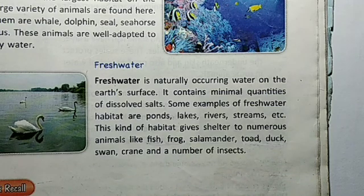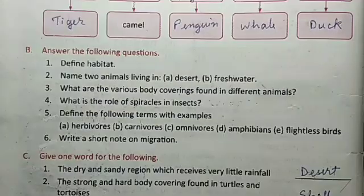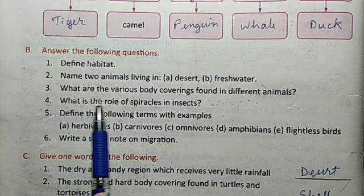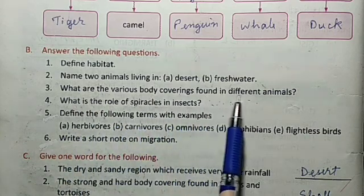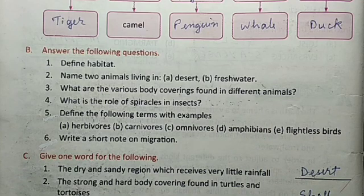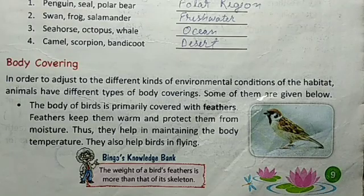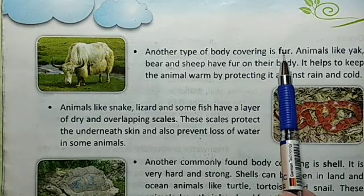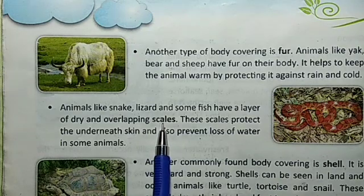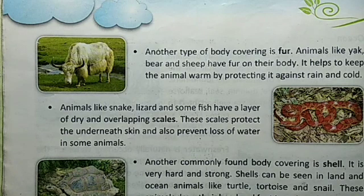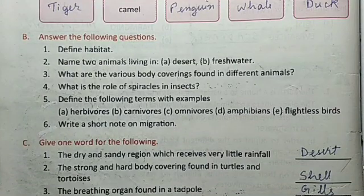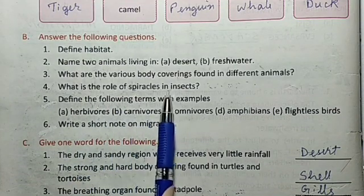These are examples of animals in their respective habitats. Next, question number 3: what are the various body coverings found in different animals? The body coverings found in different animals are: feathers, fur, scales, and shell.